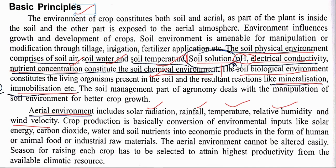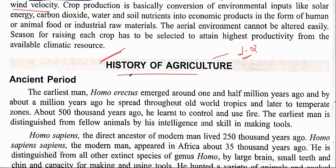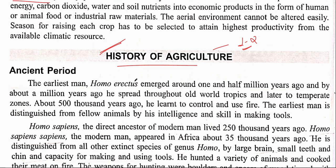The important part now is the history of agriculture. Each year one or two questions are asked directly from this first chapter, and the most important part of Chapter 1 is the history. Whatever subject you are preparing — plant pathology, breeding, genetics, or agronomy — history is of utmost importance.